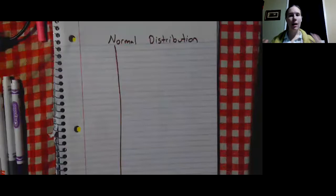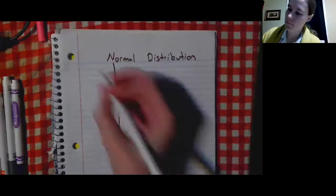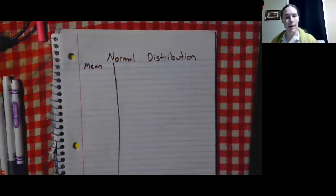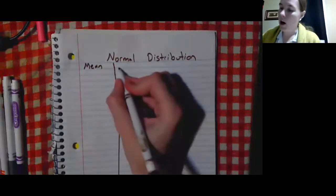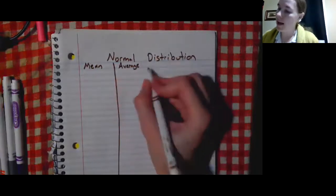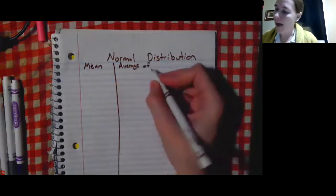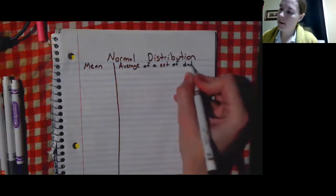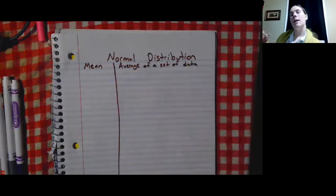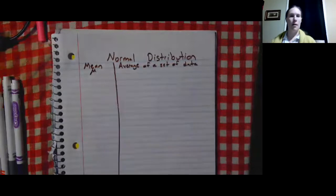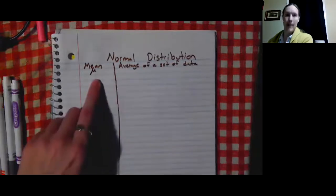To understand normal distribution, we need to think of some other terms first. The first term is the mean. The mean, as we know, is our average — specifically the average of a set of data. And the mean goes by this little symbol here, which means the mean.